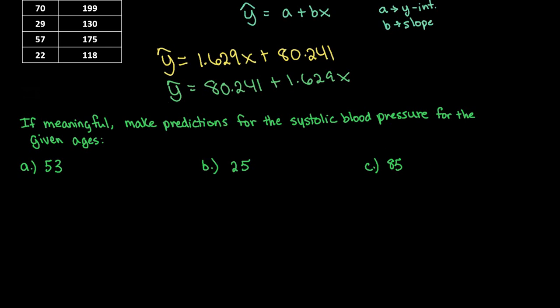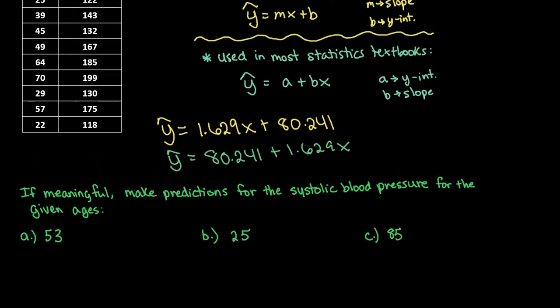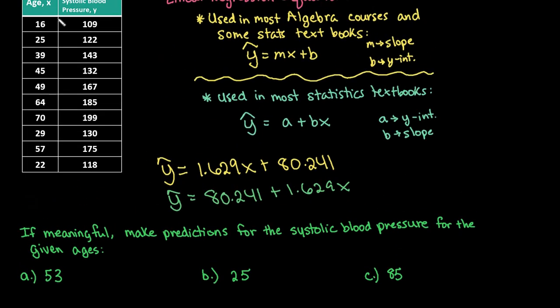As far as the predictions go, what you want to do is look at the range of your original x values. It's really important that you look only at the x values. The y values do not matter. And you want to find your lowest value and your highest value. My lowest value is 16, so that's my minimum, and my highest value is 70. That's my maximum. So I only want to make predictions for values that fall between 16 to 70.